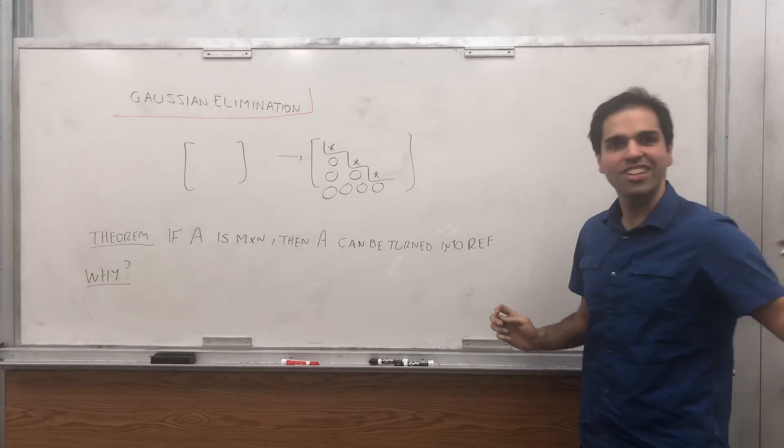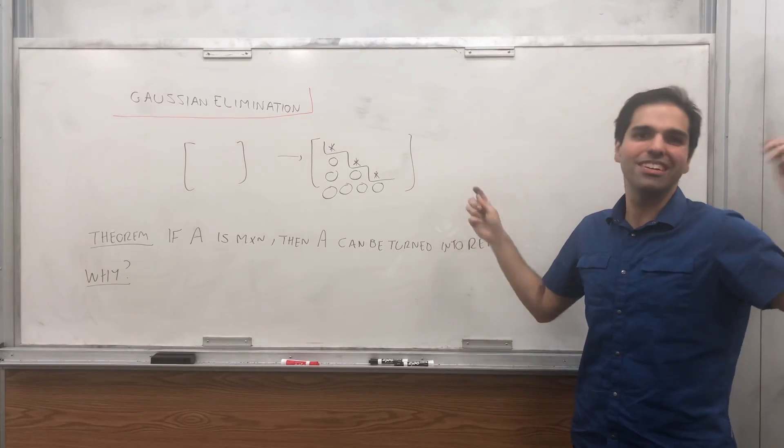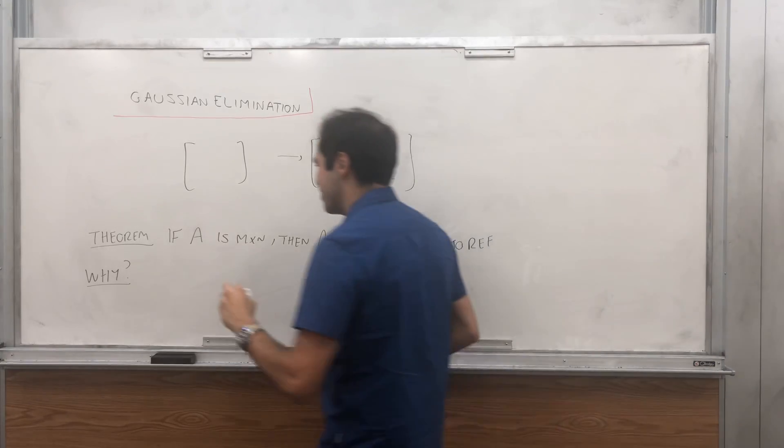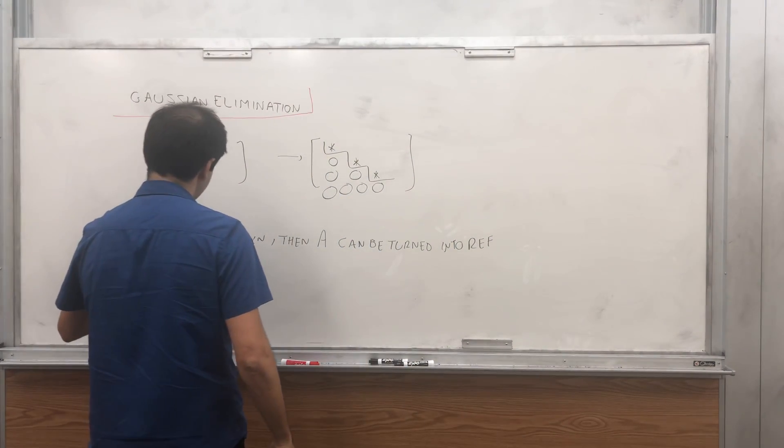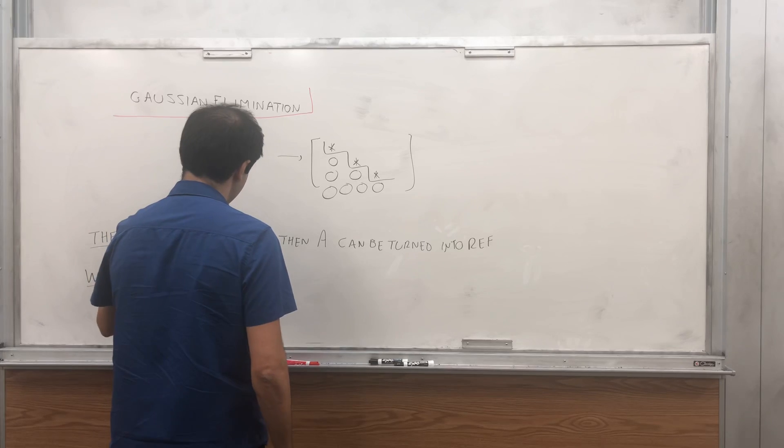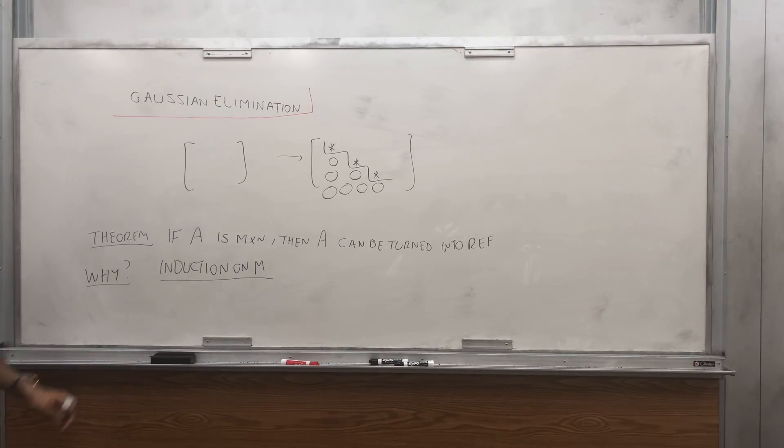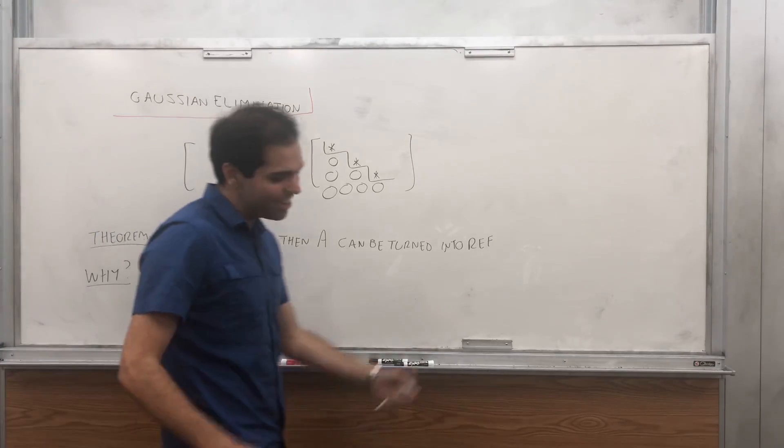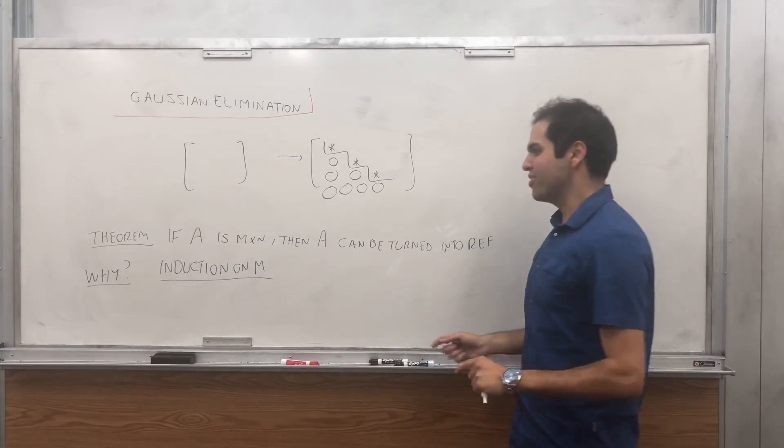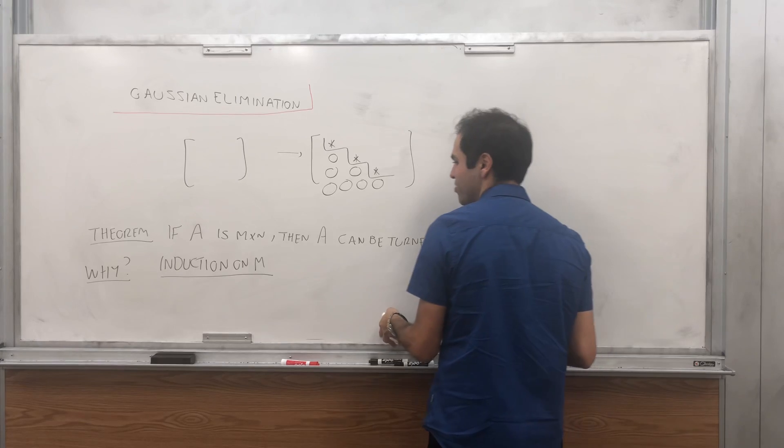And here we will use induction on M, the rows, because it's called row reduction. So induction on M. If M is zero, it's the empty matrix, we're done, which is correct. But just for the sake of clarity, let's assume M is one.